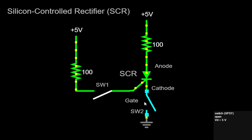However, if we close SW2, a direct path is established between the cathode and the ground. As a result, current can now flow from the anode through the SCR and reach the cathode, completing the circuit.